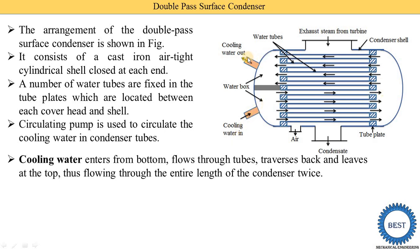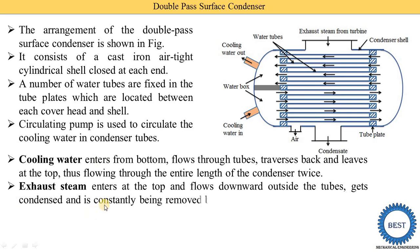Exhaust steam from the turbine enters at the top and flows downward, coming into contact with the tubes. Inside the tubes the water is flowing at a lower temperature, while the steam temperature is higher. Heat energy from the steam is transferred to the water, so the steam starts to condense and the water temperature increases. The condensed steam is collected at the bottom part of the condenser, and then the condensate is supplied to the boiler using a condensate pump.